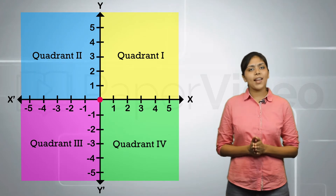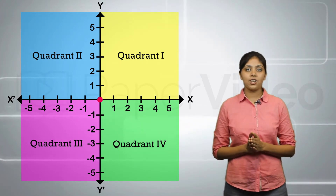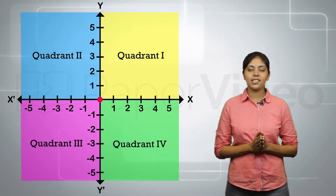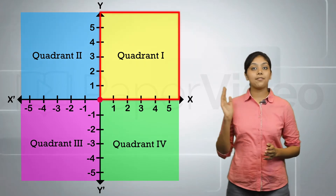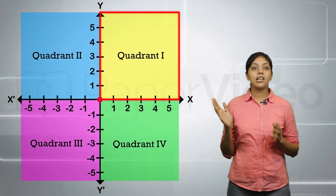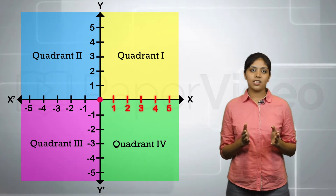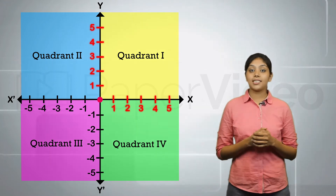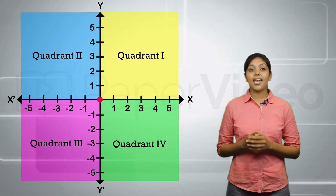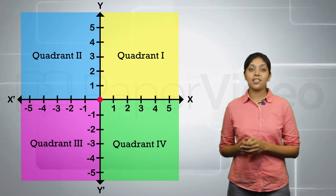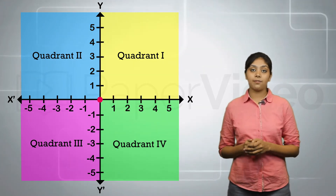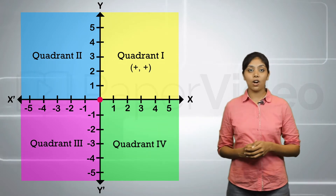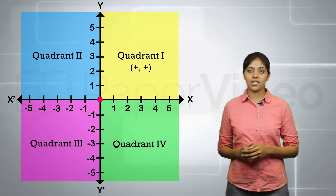Now let us understand the sign convention used in the x and y-coordinates of a point. In the first quadrant, the x-coordinate and the y-coordinate are both positive. This means that any point lying in the first quadrant will have both its abscissa and ordinate positive.